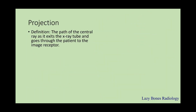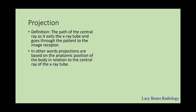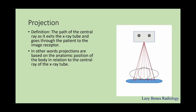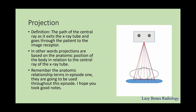Projections. This is the path of the central ray as it exits the x-ray tube and goes through the patient to the image receptor. In other words, projections are based on the anatomic position of the body in relation to the central ray or the x-ray tube. Remember the anatomical relationship terms from episode 1? They are going to be used throughout this episode, so I hope you took good notes.